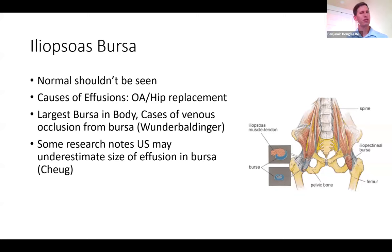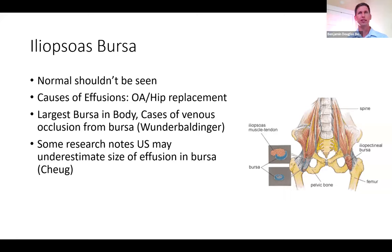Normally, you should not see any fluid within the bursa. Common causes of a bursal effusion could be osteoarthritis or a recent hip replacement creating increased friction on the posterior portions of the iliopsoas tendon. Despite being the largest bursa in the body, we really shouldn't see any fluid there — if you're seeing fluid, it represents an effusion. There are cases where such a large effusion can compress adjacent neurovascular structures, even causing unilateral edema. Research notes that ultrasound may underestimate effusion size compared to MRI.